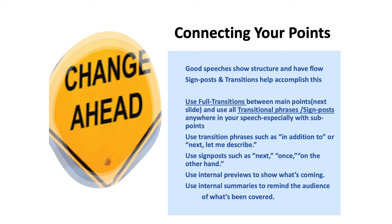We love when you add signposts in front of your sub points — that would be an excellent, superior, A-level thing to do. For example: 'The first piece of equipment you would need for hot air ballooning is the basket and the envelope — that's what the balloon's called. The next piece of equipment is the piece that fires the flame. You'll also find this piece of equipment. And finally, this piece.' So you walk through each sub point using words like first, next, you'll also find, and finally — and that helps walk the audience through your speech step by step.